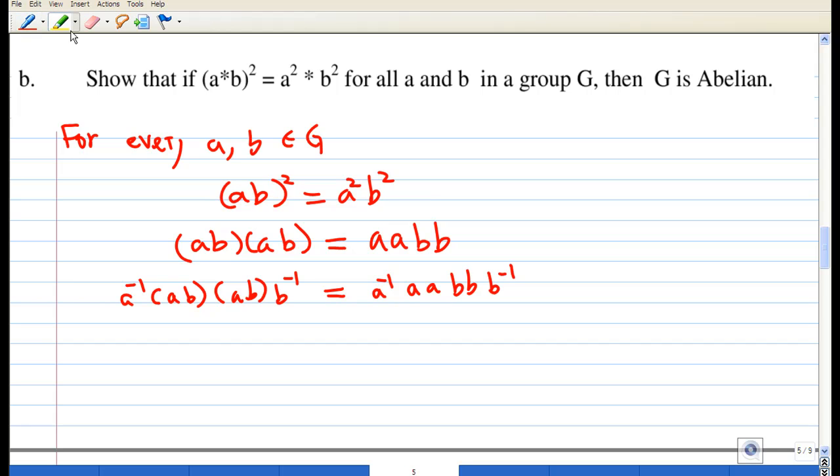After multiplication on the left and right, using associativity, we can write: a⁻¹(ab)(ab)b⁻¹ = a⁻¹(aa)(bb)b⁻¹. This is possible by the associativity of the group.